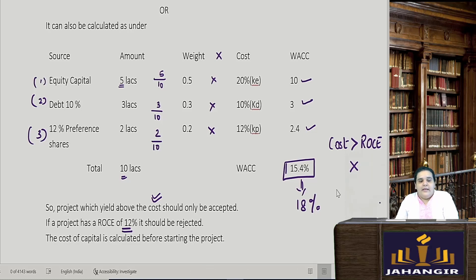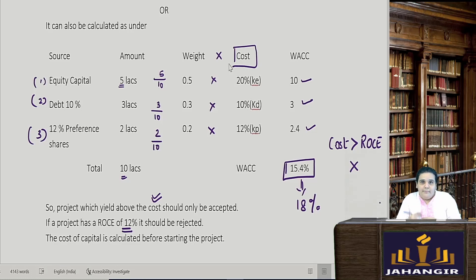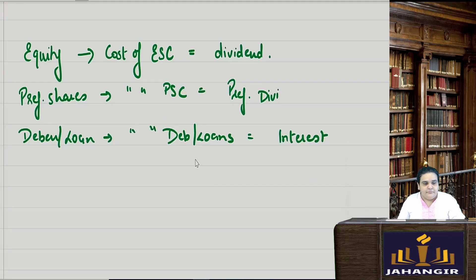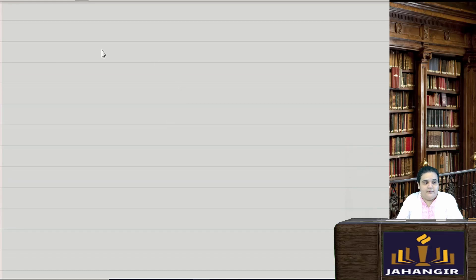In the previous example the cost of each source was already provided. But in actual exam sums we have to find this cost ourselves, for which we have fixed formulas. Let's start with those formulas and then take one example for each.